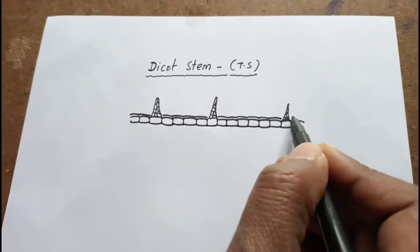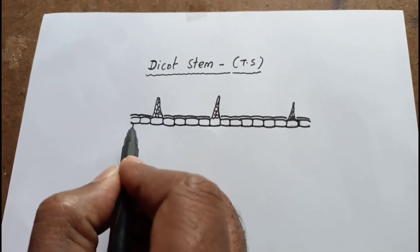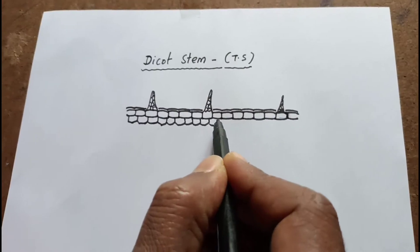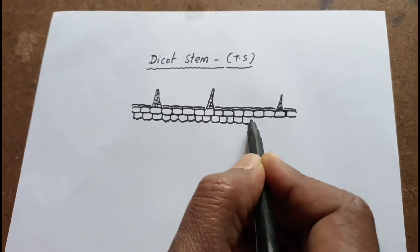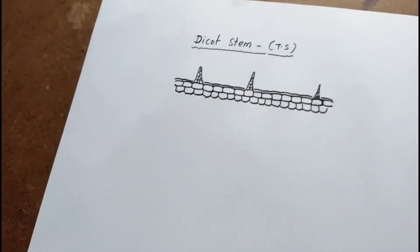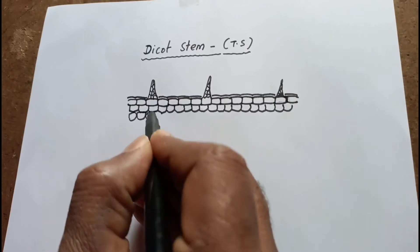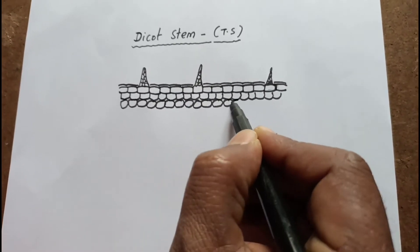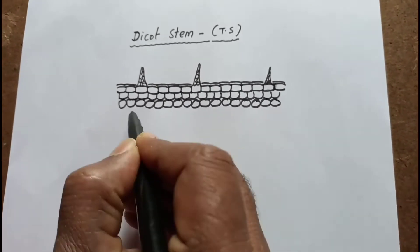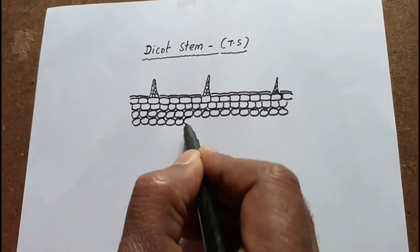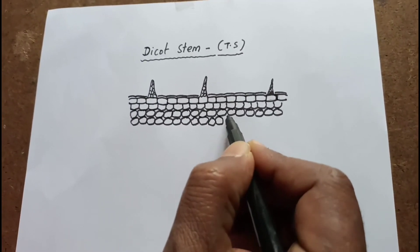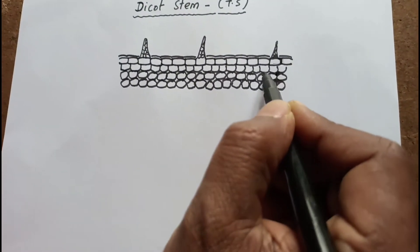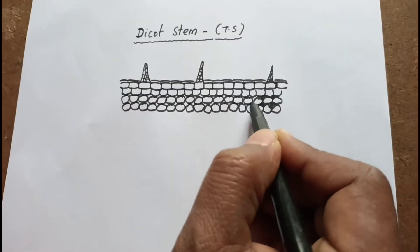Now I am drawing the cuticle outside the epidermis. Below the epidermis there is a hypodermis, which is made up of collenchyma in dicot stems. You draw cells like this. Generally this hypodermis is present in two to three layers. You draw the cells and then make the corners of these cells dark to represent the collenchyma.